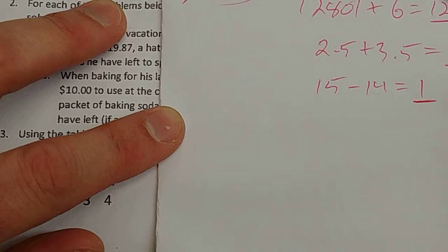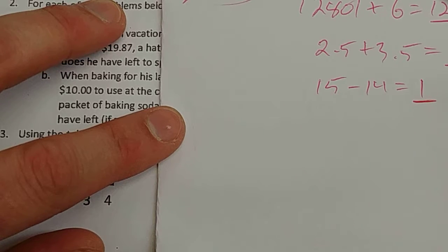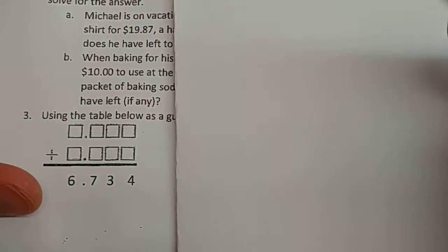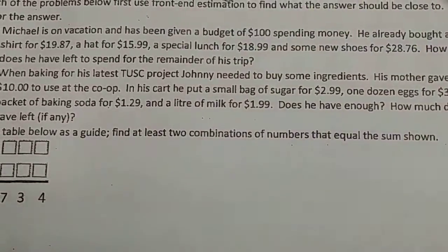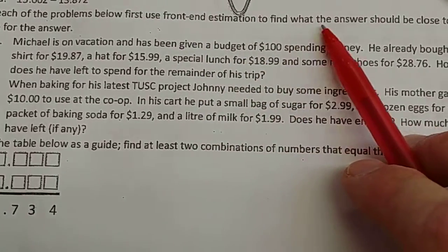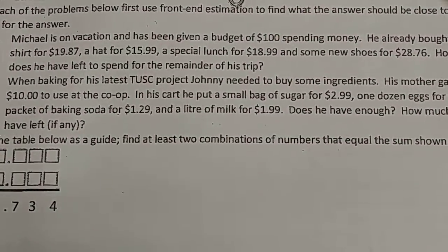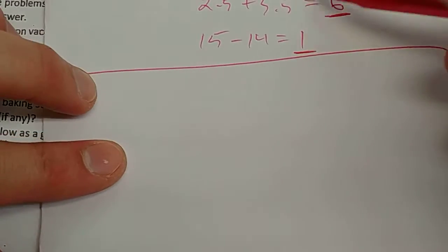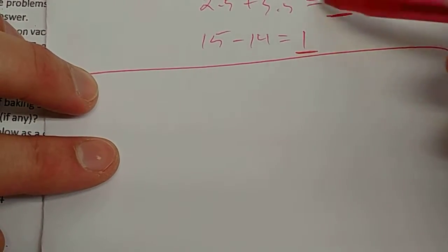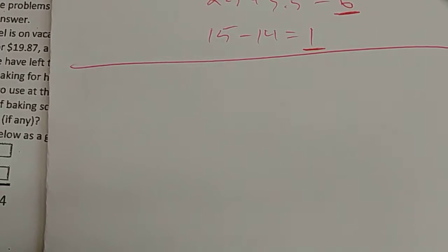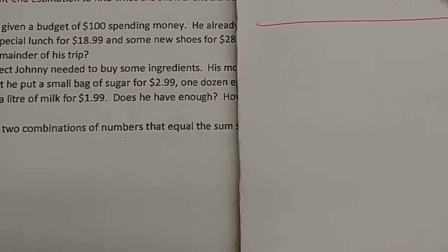Okay. Number two. For each problem, each of the problems below, first use front-end estimation to find what the answer should be close to. Then solve for the answer. So it's asking you first to do what we just did. If you don't do that first, then you're just disregarding the question and getting it wrong. So let's use front-end first.